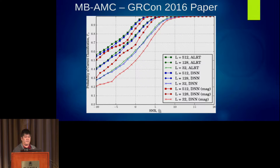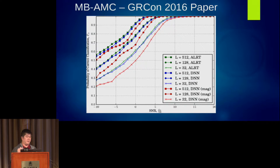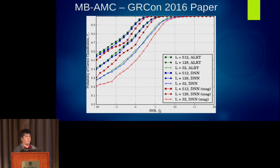Performance-wise, we have a graph at various input lengths. The most important thing is that the green lines are pretty close to the blue lines. The green is the likelihood-based stuff, and we don't expect to do much better than that. The blue was the moment-based approach.